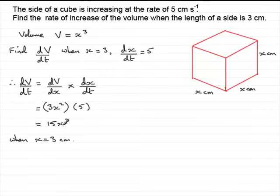Substitute that into here and that will give us dV/dt. So therefore dV/dt is going to be equal to 15 times 3 squared, or 15 times 9. And that comes out to 135.